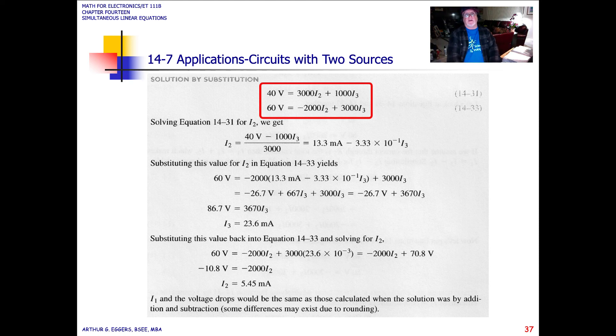So we left off with applications, circuits with two sources in it, and looking at a solution by substitution. So we've got our two expressions for our circuit: 40 volts equals 3000 I2 plus 1000 I3 as one of our circuit loops, and 60 volts equals minus 2000 times I2 plus 3000 times current I3. So those are our two loops that we worked with.